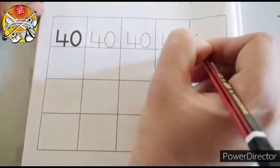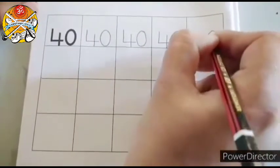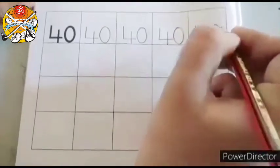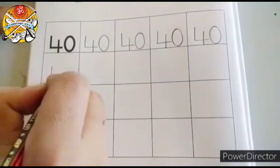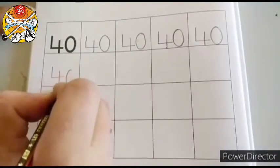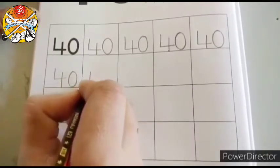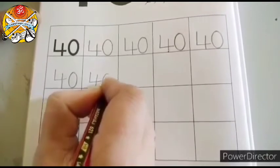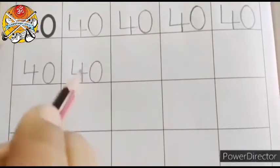One more time I will show you. 4, 0, 40. Now in the next box we will write numeral 40. I will show you one more time. 4, 0, 40. So children in this manner you have to write in your textbook.